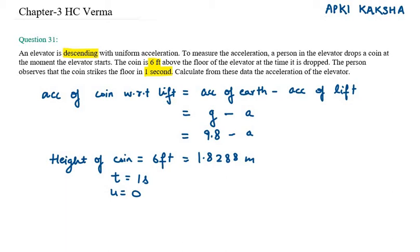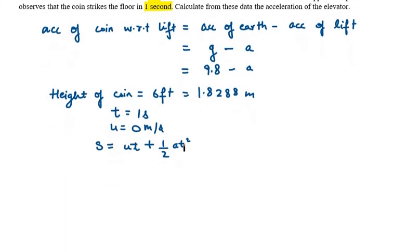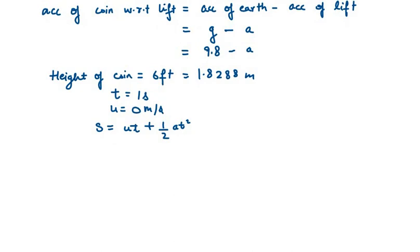Now for acceleration, I think this will be the most suitable method: S equals UT plus half AT squared. Because we have S given, we know the value of U, we know the value of A in terms of the unknown, and we know the value of T.